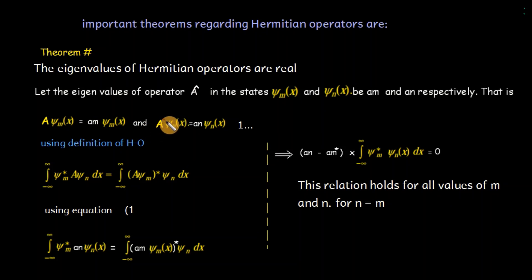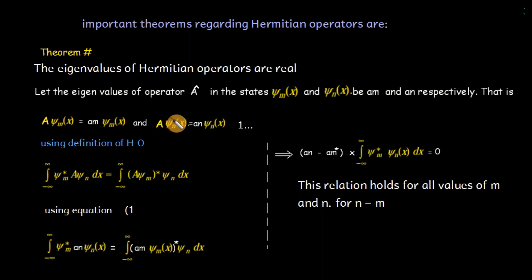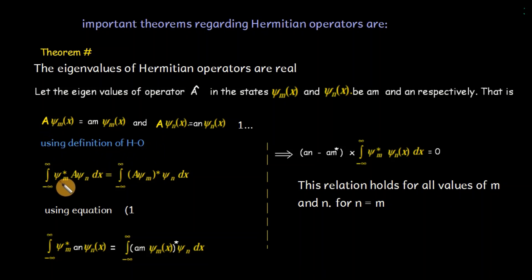Operator means momentum operator, position operator, kinetic energy operator, total energy operator, angular momentum operator and so on — all of these are Hermitian operators whose eigenvalues are real. If operator A is Hermitian, it must satisfy the Hermitian operator condition already discussed, and this condition will be fulfilled.